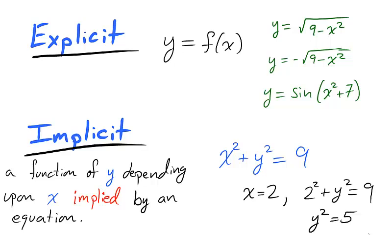As we know, there's two values which will give us that: y is equal to positive square root of 5 and y is equal to negative square root of 5. It is not clear from the equation which one is needed for our function.